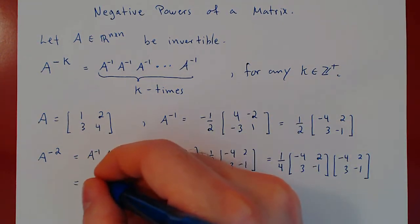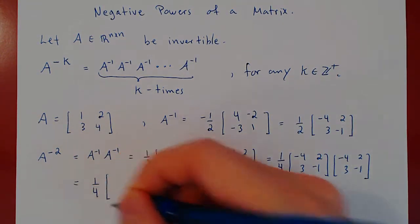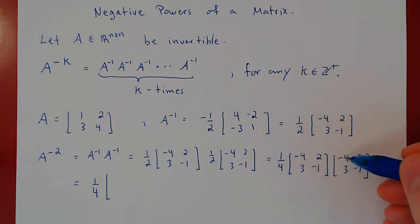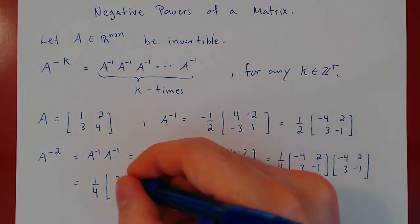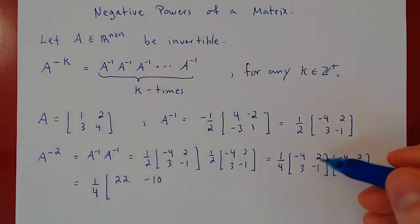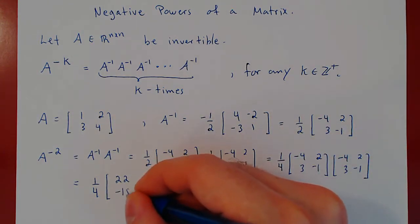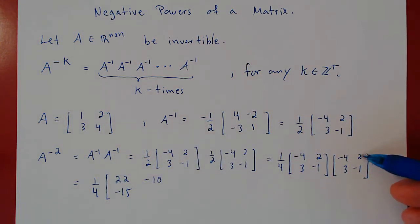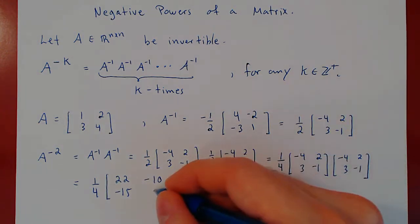And then we can perform this single matrix multiplication. So, we'll get 16 plus 6, 22, negative 8, negative 2, negative 10. Second row, negative 12, negative 3, negative 15, 6 plus 1, positive 7.